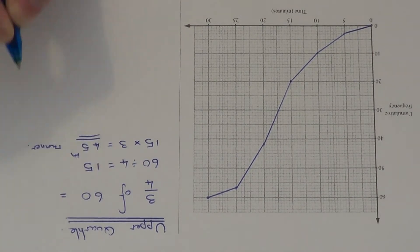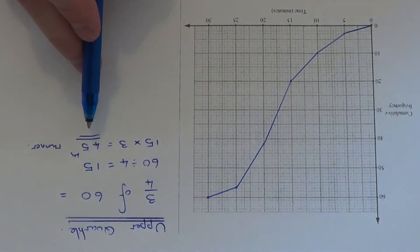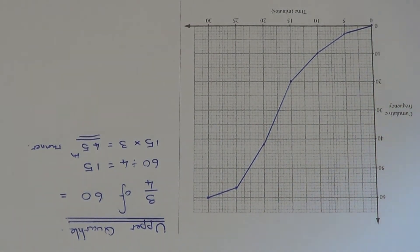So the upper quartile will occur on the 45th runner who took part in the race. So we just need to read this off the graph now.